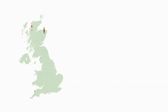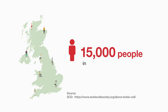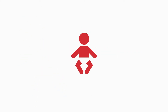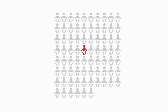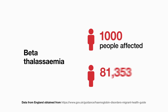Sickle cell disease, known as SCD, affects approximately 15,000 people in the UK, and 1 in 76 babies born in the UK carry sickle cell traits. Beta-thalassemia affects approximately 1,000 people, with around 214,000 carriers.